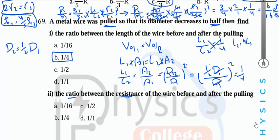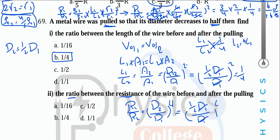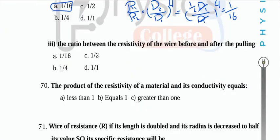The ratio of resistance before and after pulling: R1/R2 = (d2/d1)⁴ = (½)⁴ = 1/16. As for resistivity — same material, so resistivity doesn't change. The product of resistivity and conductivity always equals 1.